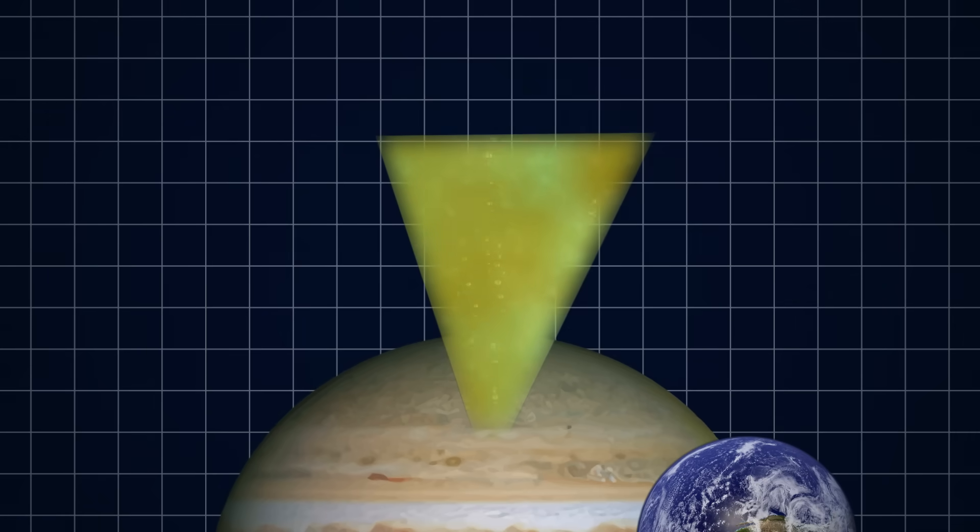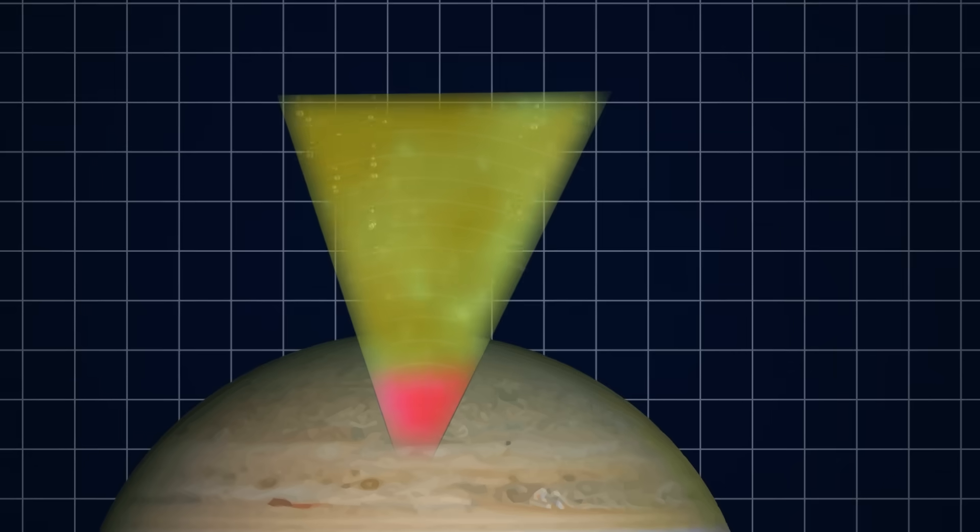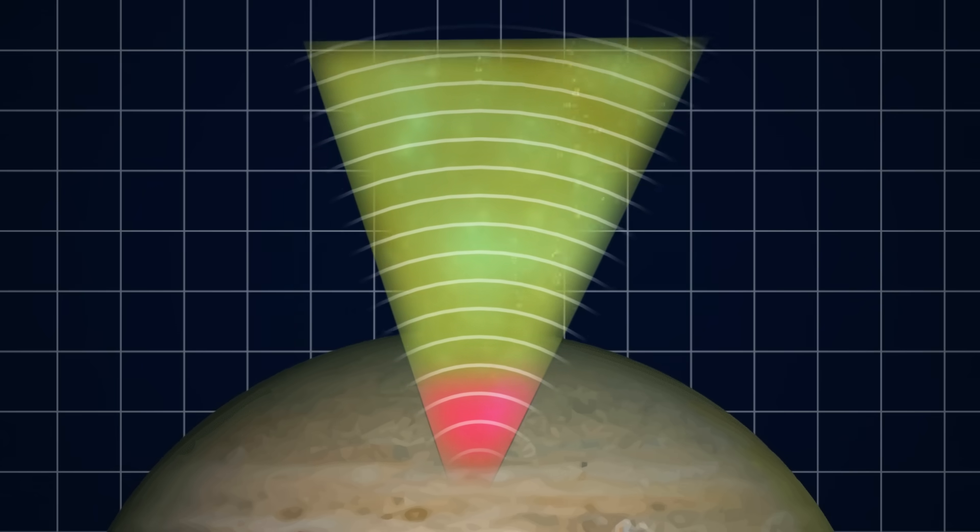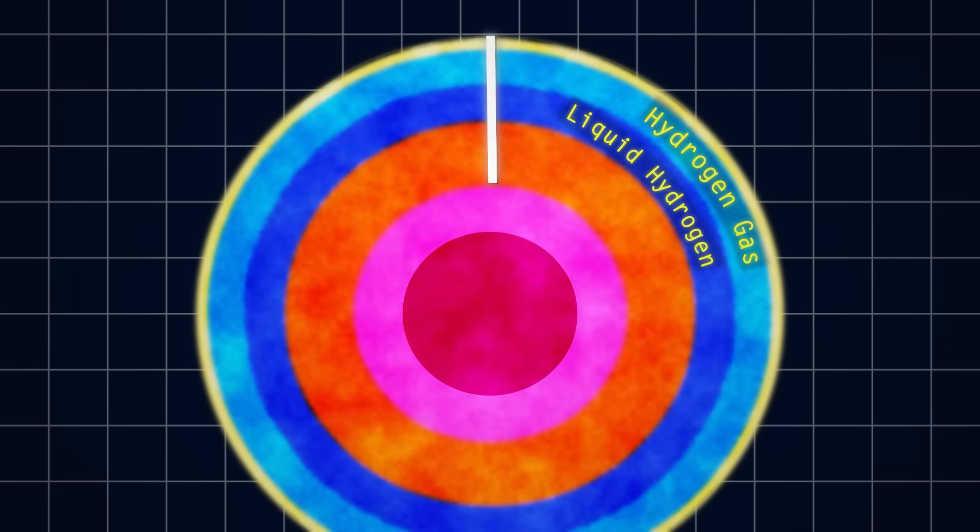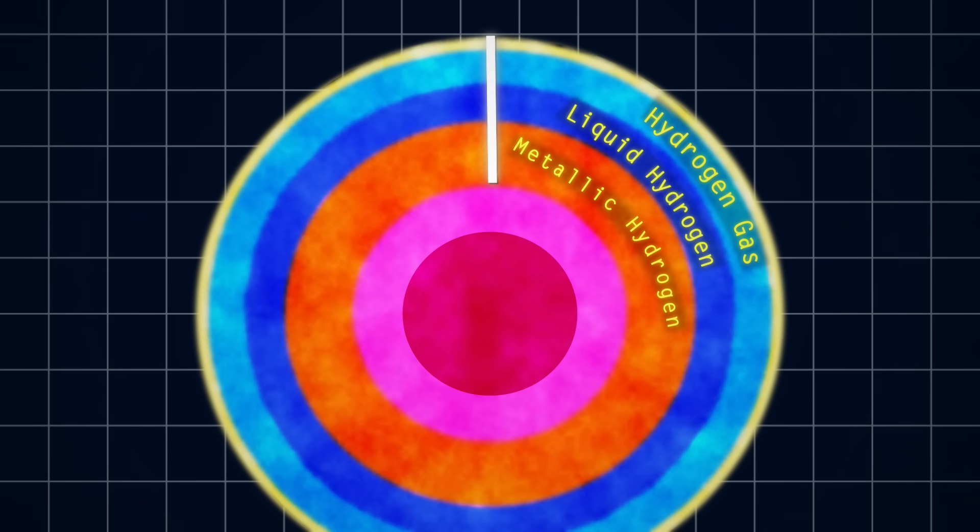This ocean is about 20,000 kilometers deep, 2,000 times deeper than Earth's ocean, and as we reach the bottom, the pressure and temperature created by the gravity well have a very bizarre effect. Under millions of times the pressure of Earth's surface, at 10,000 degrees Celsius, hydrogen changes state into something called metallic hydrogen.